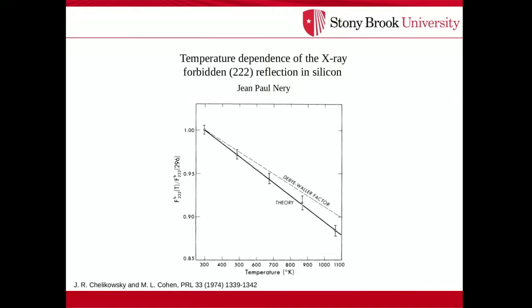I'm going to talk about the temperature dependence of the X-ray forbidden reflection in silicon. The forbidden reflection refers to an intensity plotted on the y-axis, and on the x-axis we have the temperature. This intensity decreases with temperature; it comes out from an X-ray measurement. There are experimental points, and the theory seems to agree well with experiment, but it's actually not well justified. What we are trying to do is develop a proper theory to explain this plot.